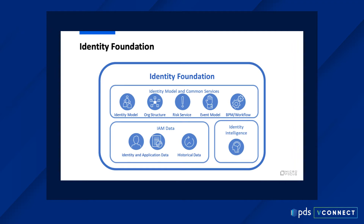The identity model covers things like business role management to describe the users and entities of the organization in a way that fits for you. Common identity services — the same workflow, business process management system, a risk system that's across everything you do from an IAM perspective. And our identity intelligence component really powers all of this and takes it to the next level.